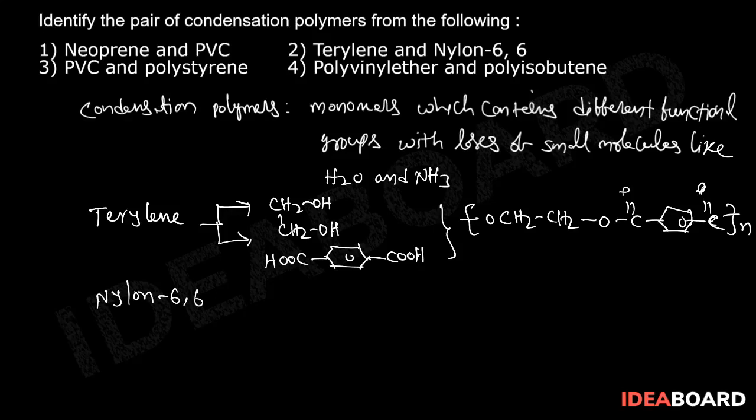Nylon 6,6 contains two monomers. One is adipic acid with the formula HOOC-(CH2)4-COOH, a dicarboxylic acid. The second one is hexamethylene diamine.